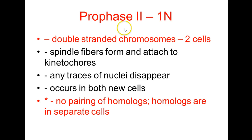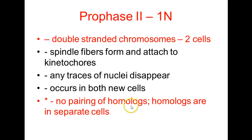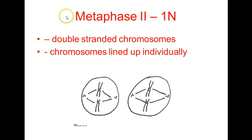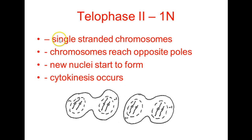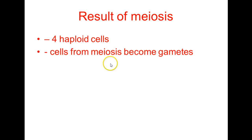In prophase 2, the cell is haploid — all remaining stages are haploid. We have double-stranded chromosomes in two cells. Spindle fibers form attached to the kinetochores, any traces of the nuclei disappear, this occurs in both cells, and there is no pairing of homologs since homologs are in separate cells. In metaphase 2, double-stranded chromosomes line up individually. In anaphase 2, the centromere splits and sister chromatids are pulled towards opposite ends of the cell. In telophase 2, still haploid, the single-stranded chromosomes reach opposite ends, start to form new nuclei, cytokinesis occurs, and we end up with four haploid cells — the gametes, that is the egg cells and the sperm cells.